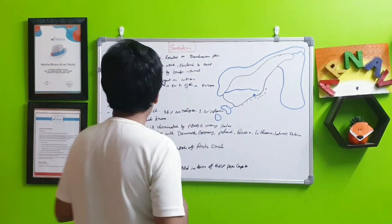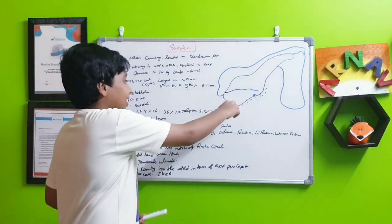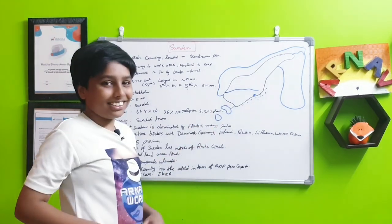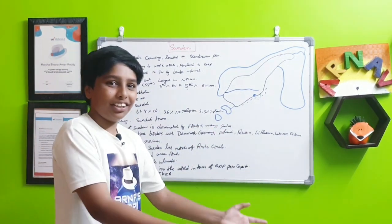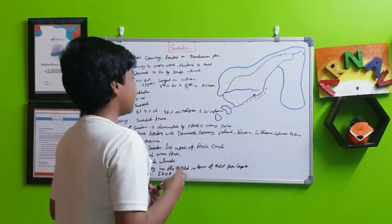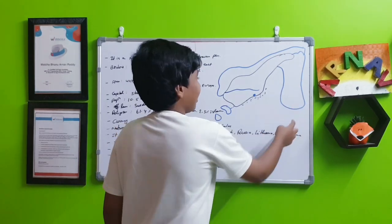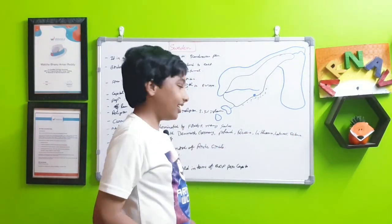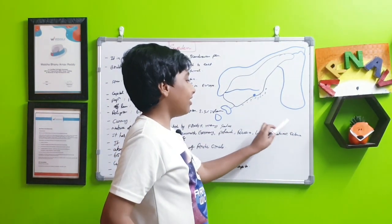It has maritime borders with Denmark—though it also has the road border, but that mainly doesn't count because it's just a road. It also has maritime borders with Germany, Poland, Russia, Lithuania, Latvia, and Estonia—the main three Baltic countries.